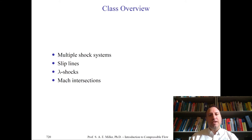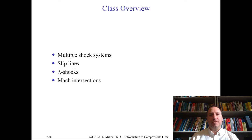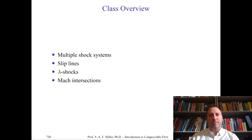We'll then look at the famous lambda shocks, which can also form — a different type of shock wave system we've never seen before. We'll then talk about the idea of Mach intersections, and introduce this through an application. We'll return to supersonic inlets, which we earlier analyzed with a single normal shock wave inlet for early fighter jets in the 1950s, and supersonic wind tunnel examples where we need to swallow shocks. Let's look at some examples to get started.